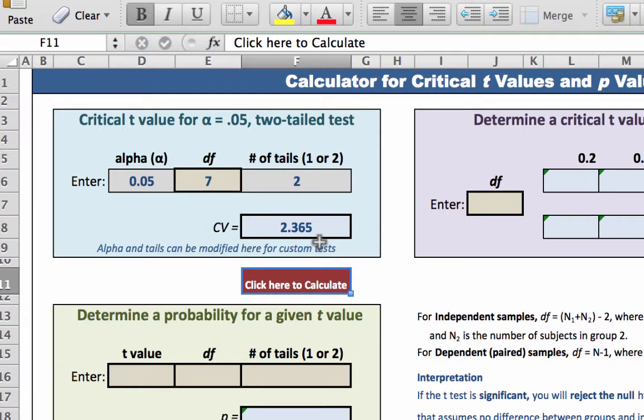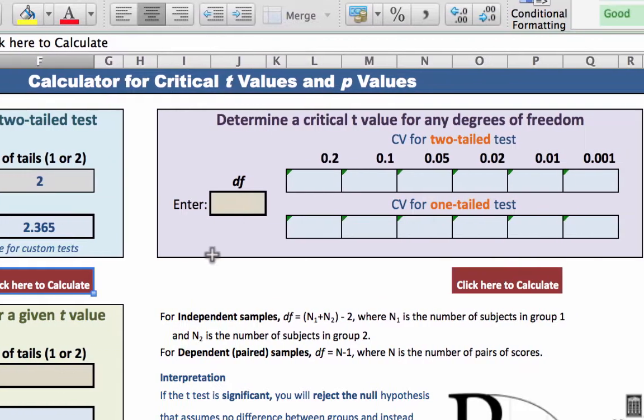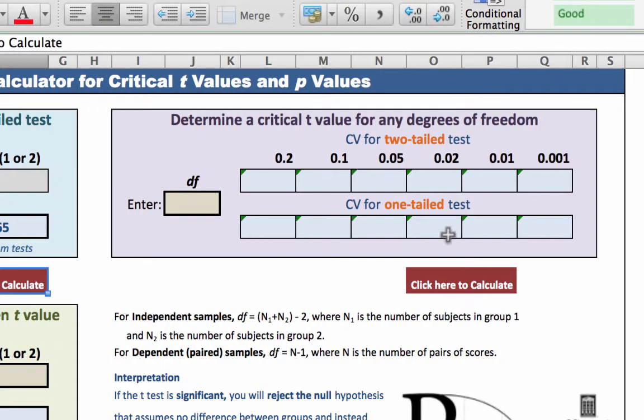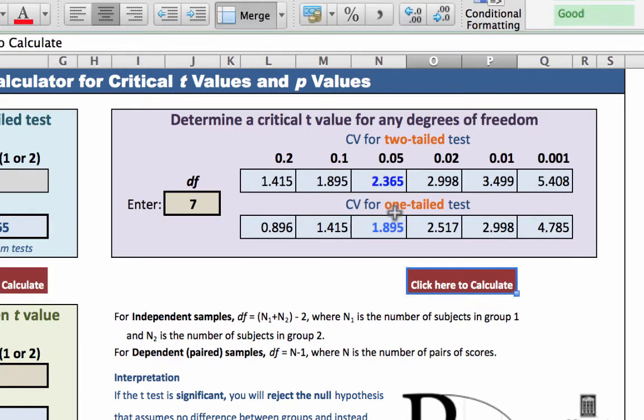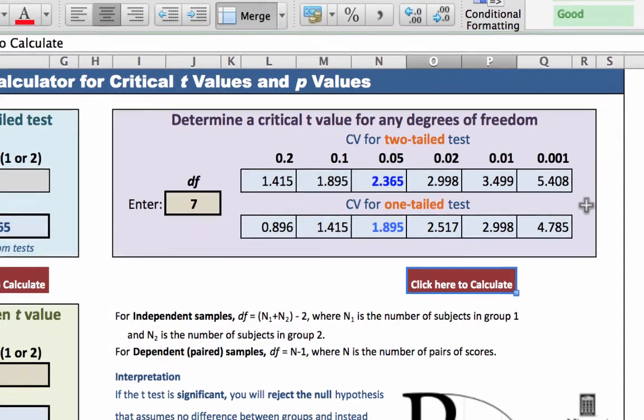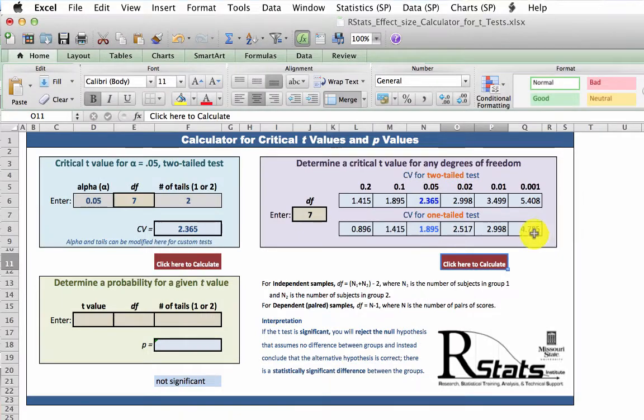But wait, there's more. If you are not doing the typical two-tailed alpha of 0.05 test, enter your degrees of freedom here. Click, and you get critical values for both one and two-tailed tests at a variety of alpha levels. You would use this box if you were doing a t-test by hand.